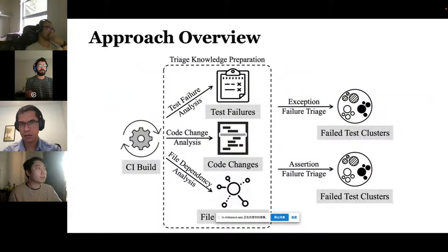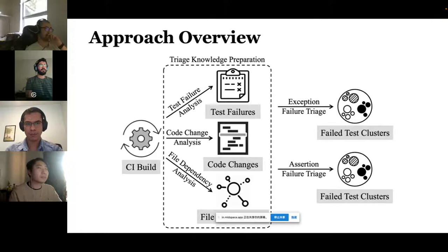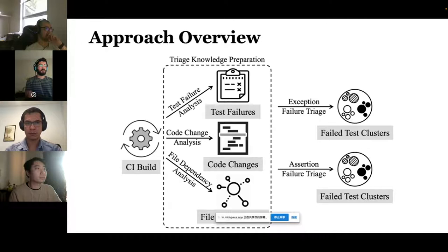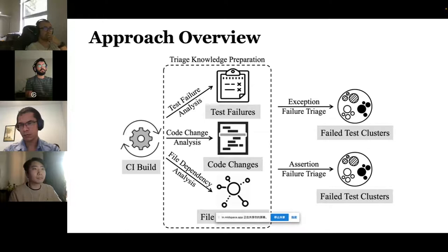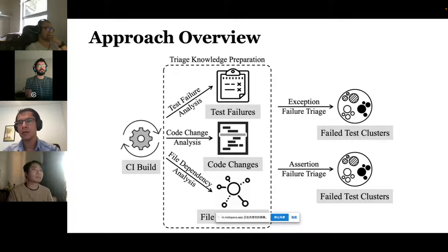We propose a new change-aware approach, BuildSheriff, to triage test failures for CI builds so that test failures with the same root cause end up in the same cluster. It works in three steps. First, change knowledge preparation: for exception failures, it prepares change knowledge by analyzing the build log, project source code, and code changes from the previous build. Then it uses different strategies to triage exception failures and assertion failures. We develop a pipeline of three strategies based on complexity of code changes, change-aware statement similarity, and exception message similarity for exception failure triage, and two strategies for assertion failure.